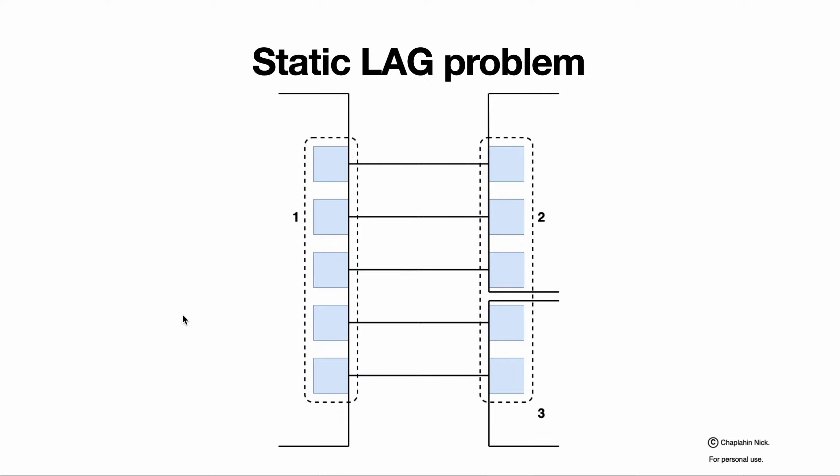static LAG has a problem. LAG always balances traffic between ports that are active members of this LAG and it takes into consideration only operational status of the LAG. So if ports are up, it is an active member of the LAG and it is participating in balancing.